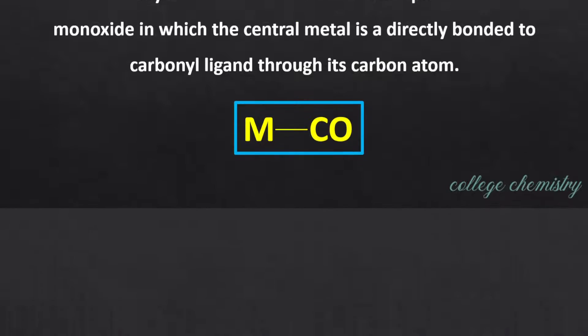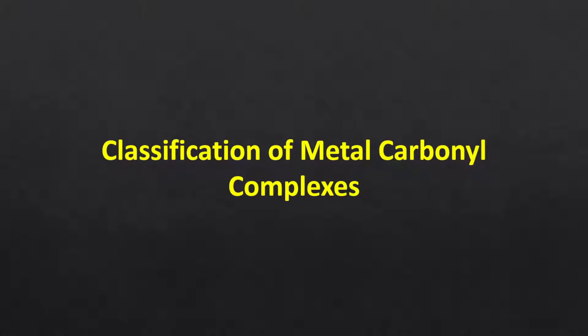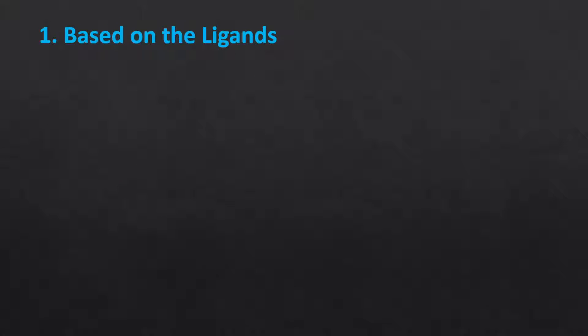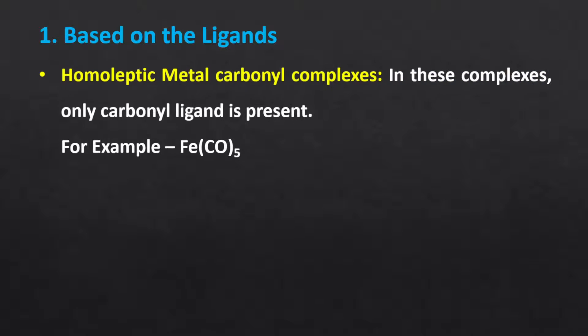Let us start with the classification of metal carbonyl complexes. We can classify them into many categories. The first classification is based on the ligand. We can classify metal carbonyl complexes into two types based on the nature of the ligand. The first type is monoleptic metal carbonyl complexes, in which only carbonyl ligand is present. For example, iron pentacarbonyl.